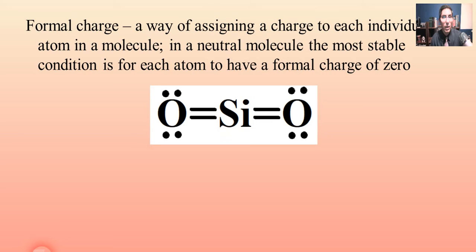Let me show you how to calculate formal charge. We're going to use some molecules that we've drawn in some previous videos and look at formal charge. So we'll start with silicon dioxide. Here's the molecule, the Lewis electron dot diagram we drew last time. We'll start with the oxygen here on the left.